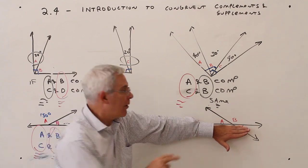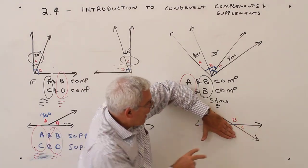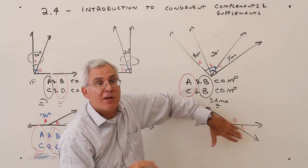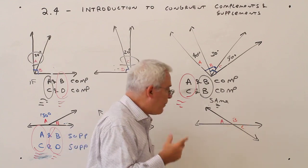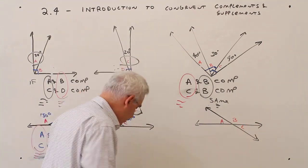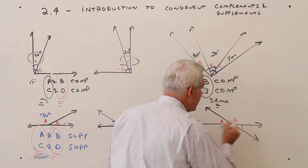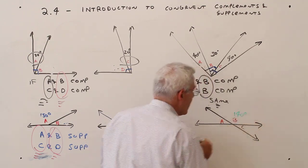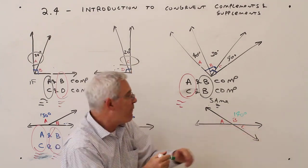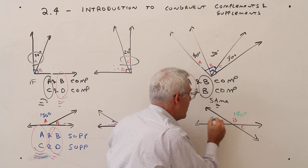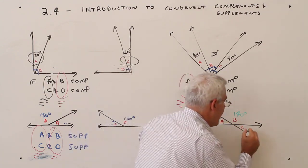Let's do the final example. I've got a straight line here so A and B are supplementary, and a straight line here so B and C are supplementary — two supplementary pairs sharing angle B. Let's suppose B is 140 degrees. Then A is 40 degrees, and C is also 40 degrees.